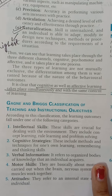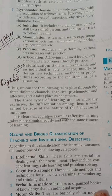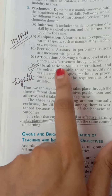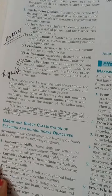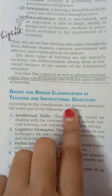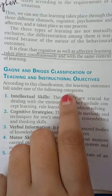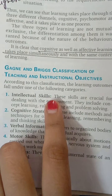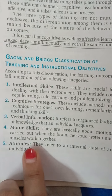Hello guys, welcome back to my channel. In my last video I completed the psychomotor domain of Bloom's taxonomy, where we learned about the stages of the three domains: psychomotor domain, affective domain, and cognitive domain. Today we will start with Gagné and Briggs' classification of teaching and instructional objectives. According to this classification, the learning outcomes fall under one of the following categories: intellectual skills, cognitive strategies, verbal information, motor skills, and attitudes.